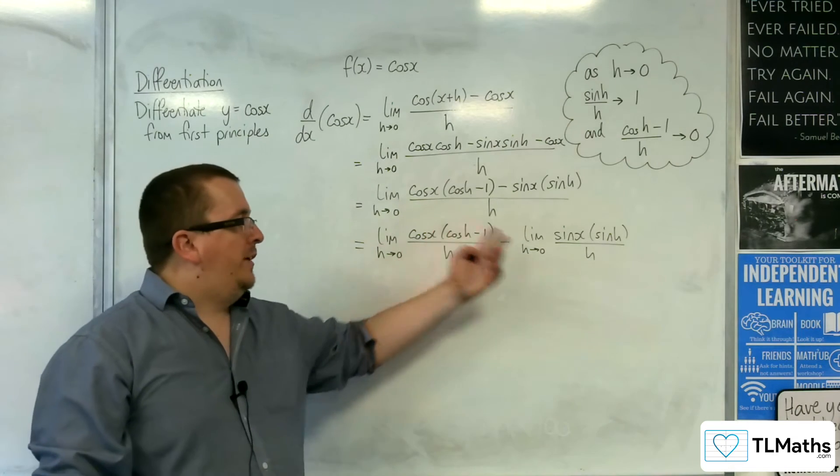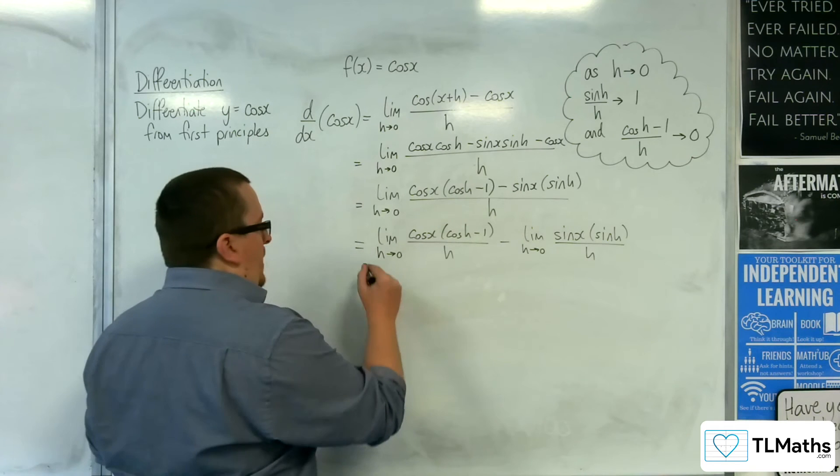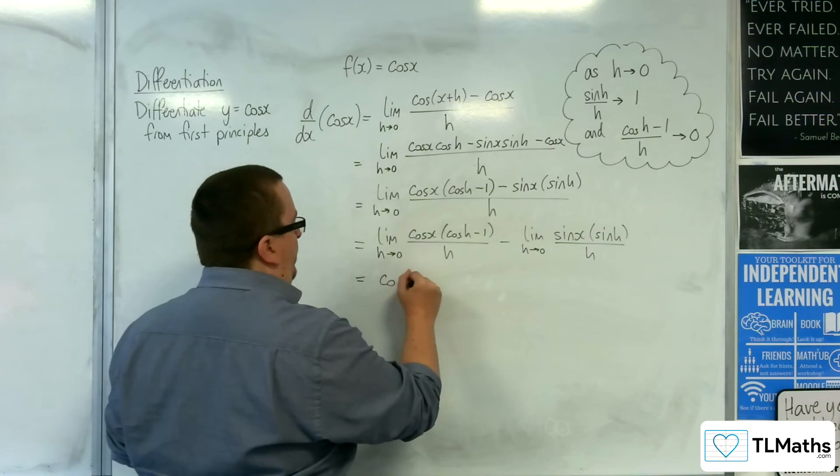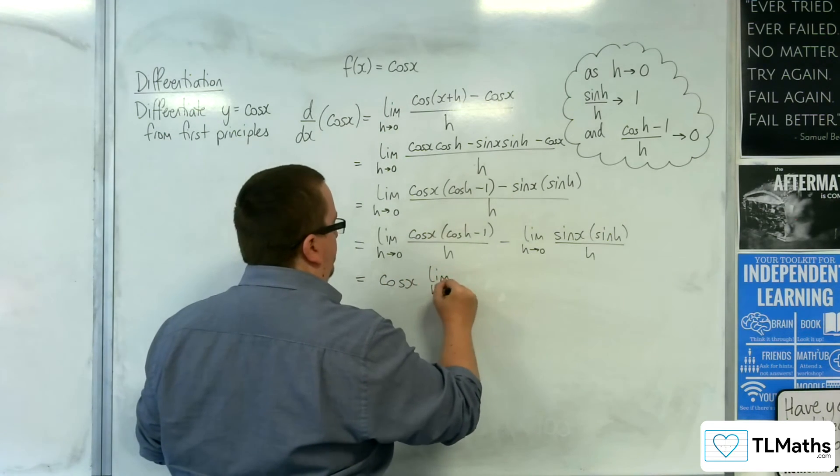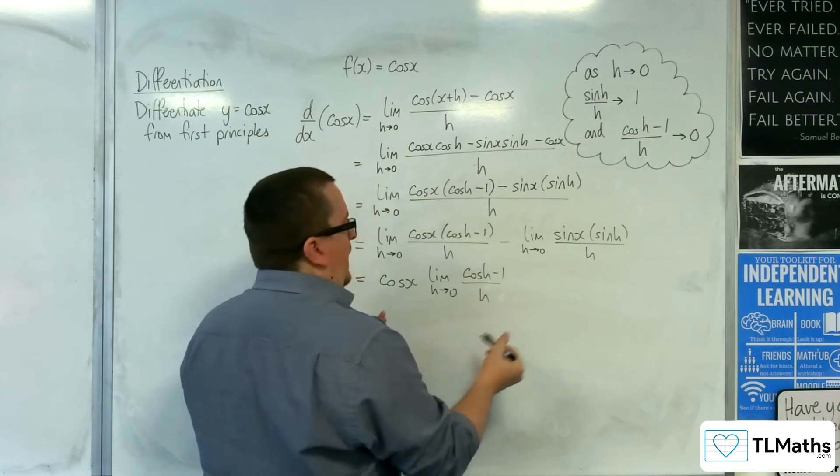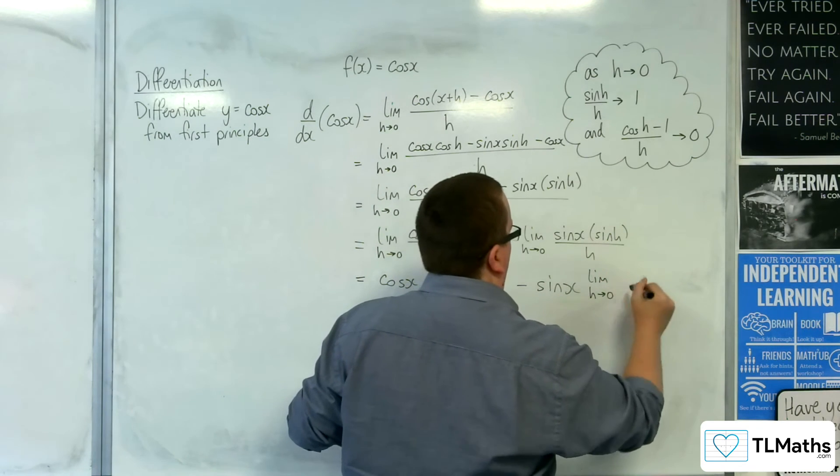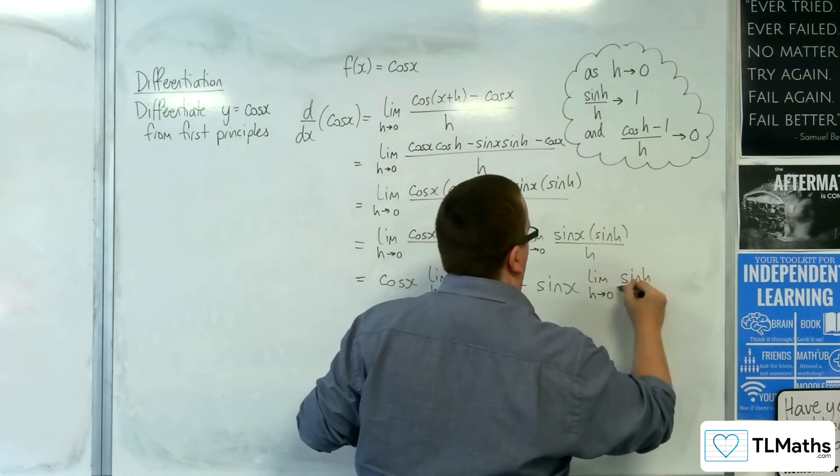Now, because the cosine x and the sine x have not got h in them, they aren't going to be affected by the limit. So you can bring those outside of the limits, and the same here. So take the sine x out. So we've got left with the sine h over h.